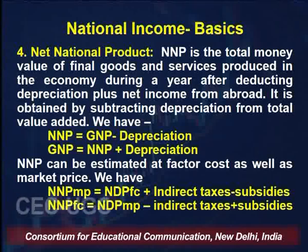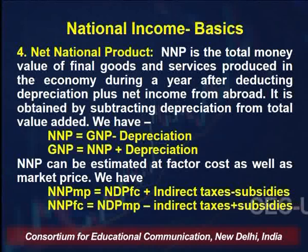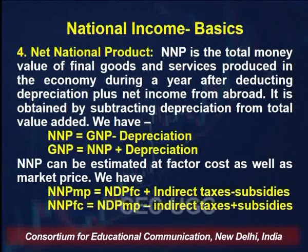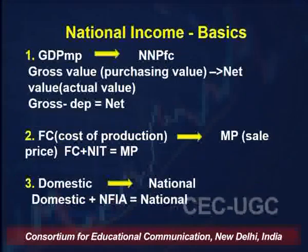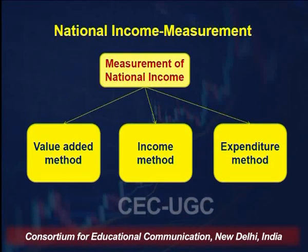Net National Product is the total money value of goods and services produced in the economy during a year after deducting depreciation, plus net factor income from abroad. NNP equals GNP minus depreciation, or equivalently GNP equals NNP plus depreciation. NNP can also be calculated at factor cost as well as market price. So the four main components of national income are GDP, GNP, NDP, and NNP.